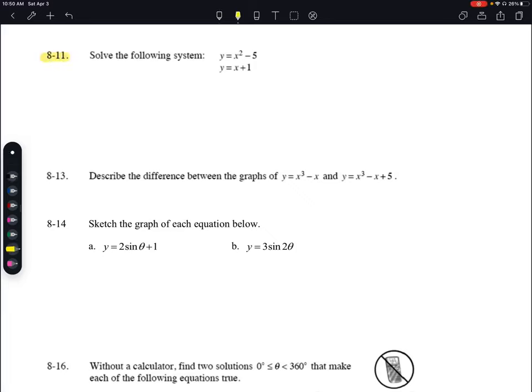This is problem 8-11 from the H8-1 homework worksheet. Solve the following system: y equals x squared minus 5 and y equals x plus 1.